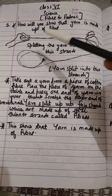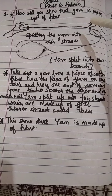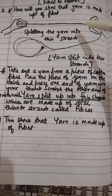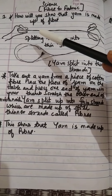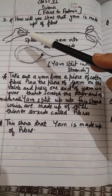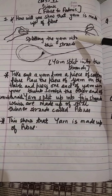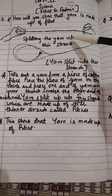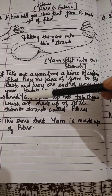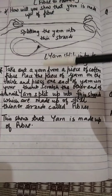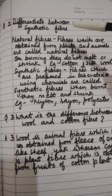This shows that yarn is made up of fibers. Now, differentiate between natural and synthetic fibers.